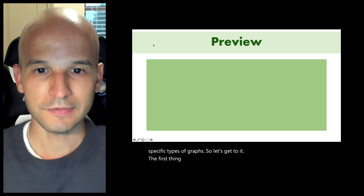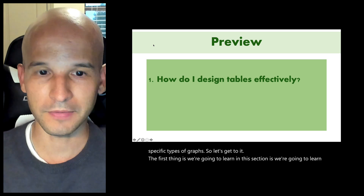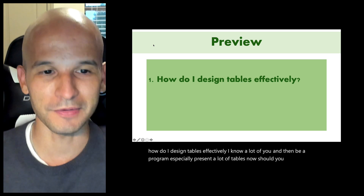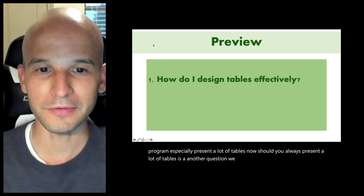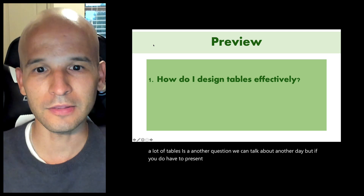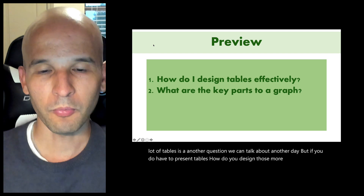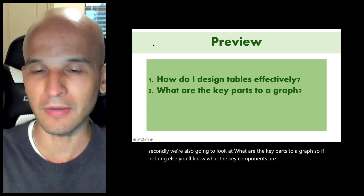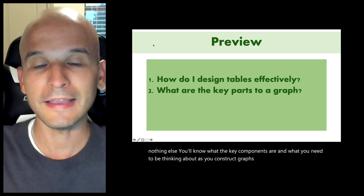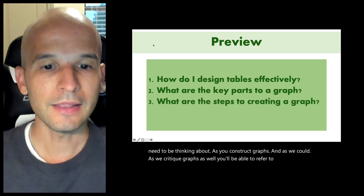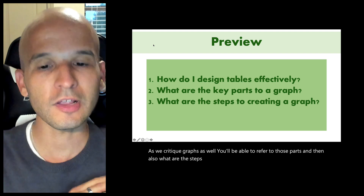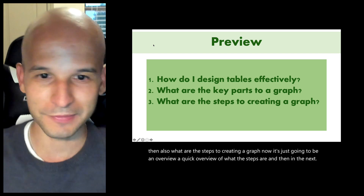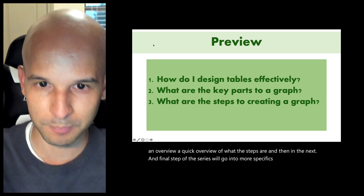The first thing we're going to learn in this section is how to design tables effectively. A lot of you in the MBA program especially present a lot of tables. If you do have to present tables, how do you design them more effectively? Secondly, we'll look at the key parts to a graph, so you'll know what components to think about as you construct and critique graphs. And we'll also cover the steps to creating a graph — just an overview, with specifics in the next segment.